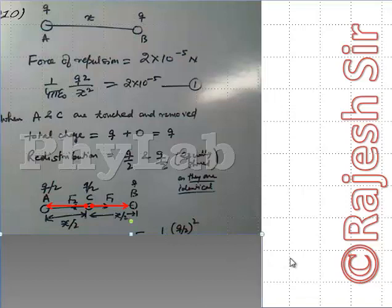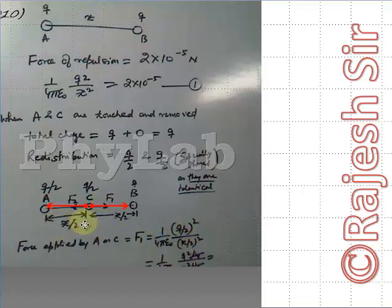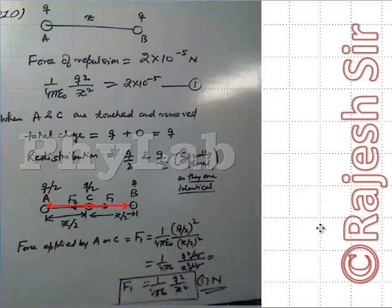I now need to find out the total force experienced by C. The force applied by A on C — let me call that F1 — is 1/(4πε₀) × (Q/2) × (Q/2) / (x/2)². That is Q/2 squared divided by x/2 squared. Solving this, F1 = 1/(4πε₀) × Q²/4 / (x²/4) = 1/(4πε₀) × Q²/x², and this force is directed in the positive x-direction (+î).